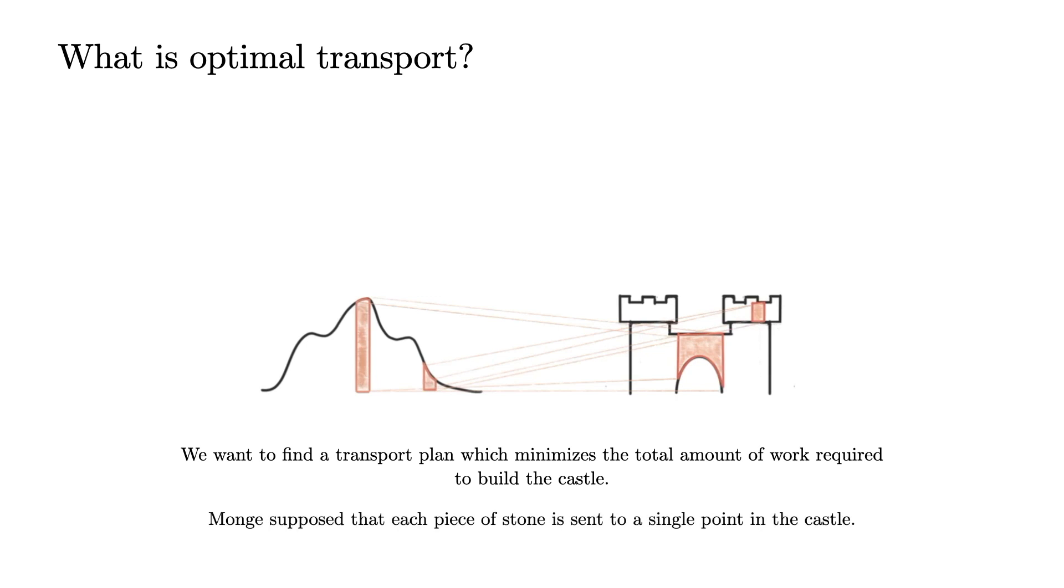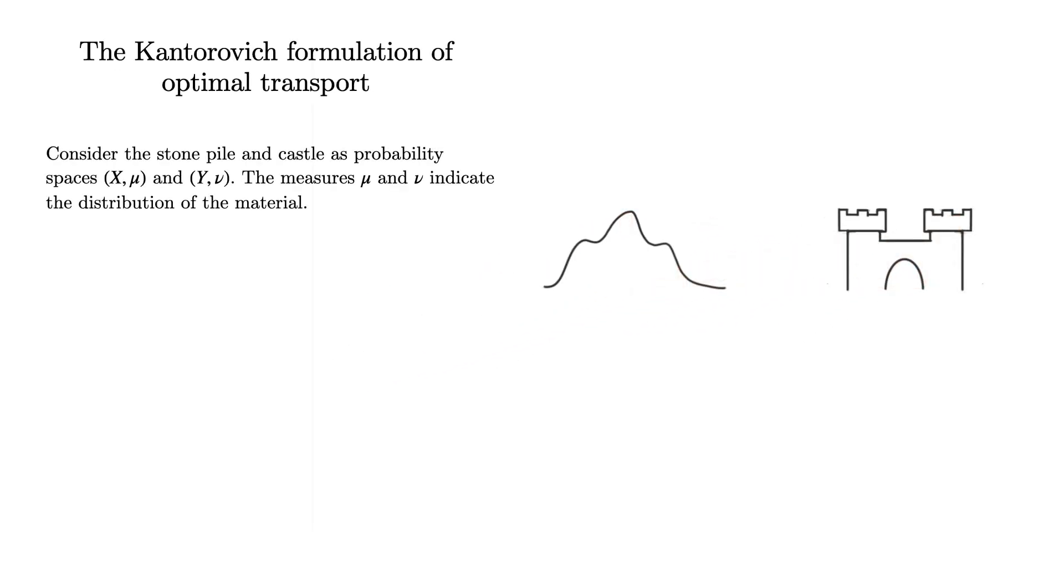In this problem, Monge assumed that each part of the stone pile would be sent to a unique part of the castle. In other words, the transport would be induced by a map from the pile to the castle.